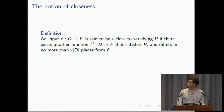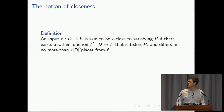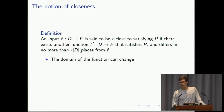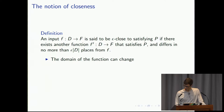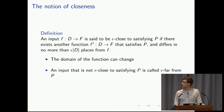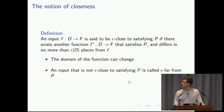Formalizing this notion of closeness: we have our input function f going from domain D to range F. It's said to be epsilon-close to satisfying the property if we can find another function that actually satisfies the property and only differs in epsilon times the magnitude of the domain many places. For graphs, we'll see a slightly different definition. Also, if an input is epsilon-close to satisfying property P, that is the same as saying it is epsilon-far from the complement. If it's not epsilon-close, it's epsilon-far, and we'll use those interchangeably.